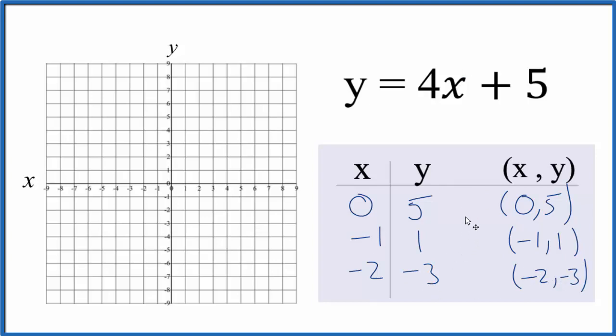So these are the points that we'll graph for the linear equation y equals 4x plus 5. We start with x is 0, y is 5. So x is 0, y, that's 5.